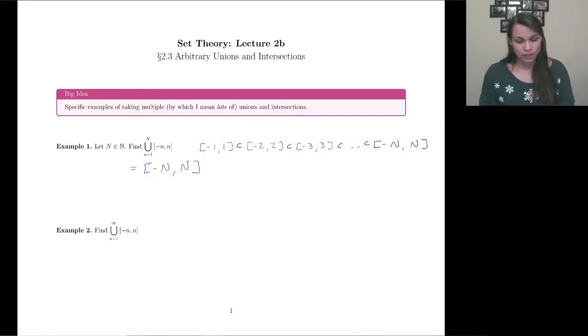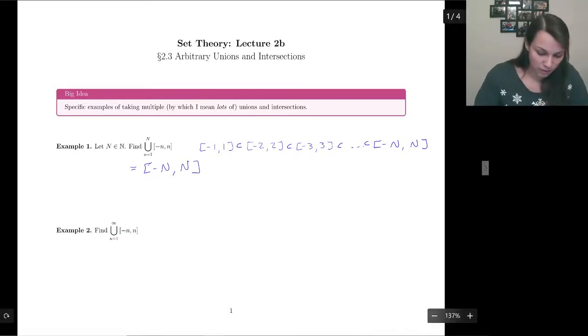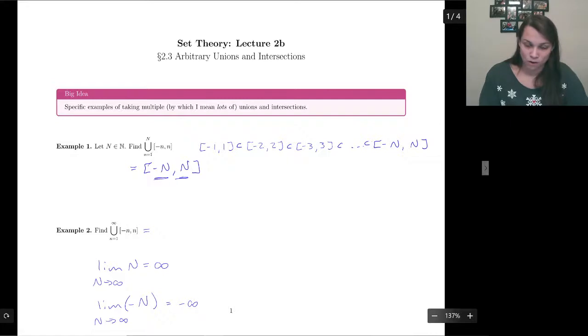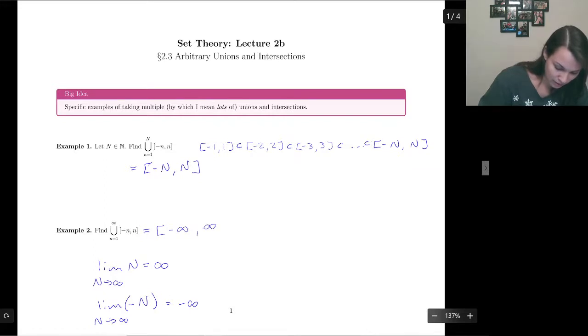And the reason that it's good to kind of think about that first is what if we wanted to look at infinitely many unions, so we're going to go all the way up to infinity. Well, we know that the limit of N would just be infinity as N goes to infinity, and the limit of negative N as N goes to infinity would be negative infinity, and then we just plug in that limit for our endpoints. So we would go to negative infinity, positive infinity.